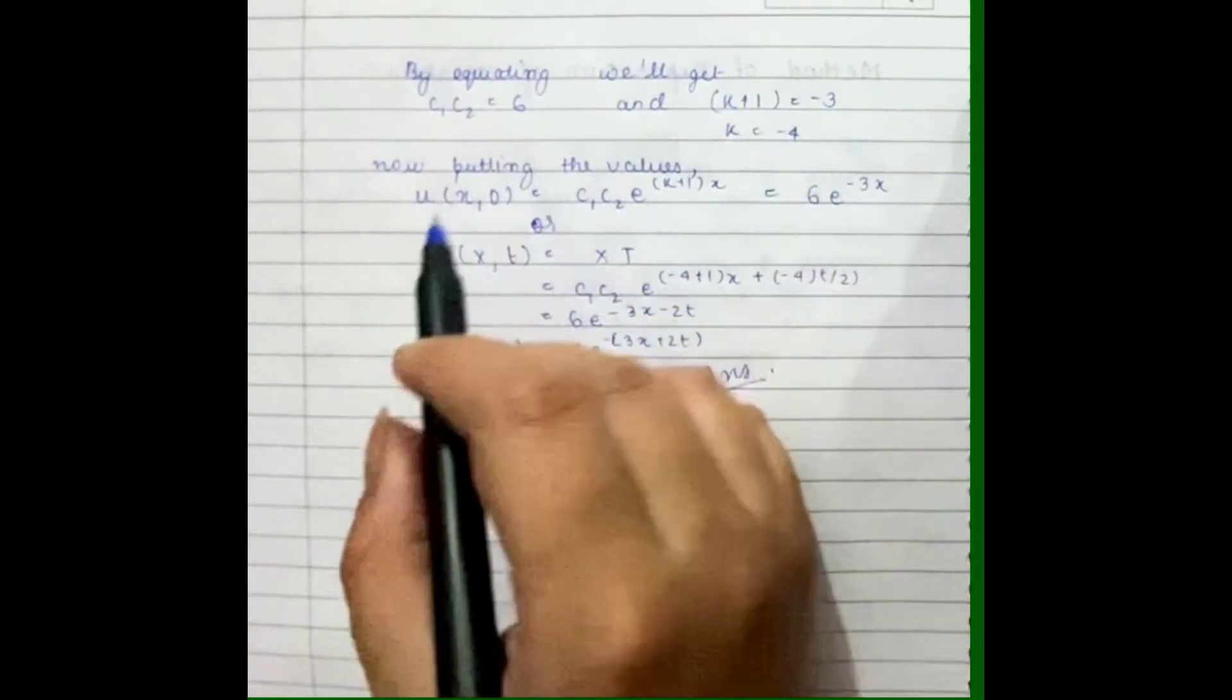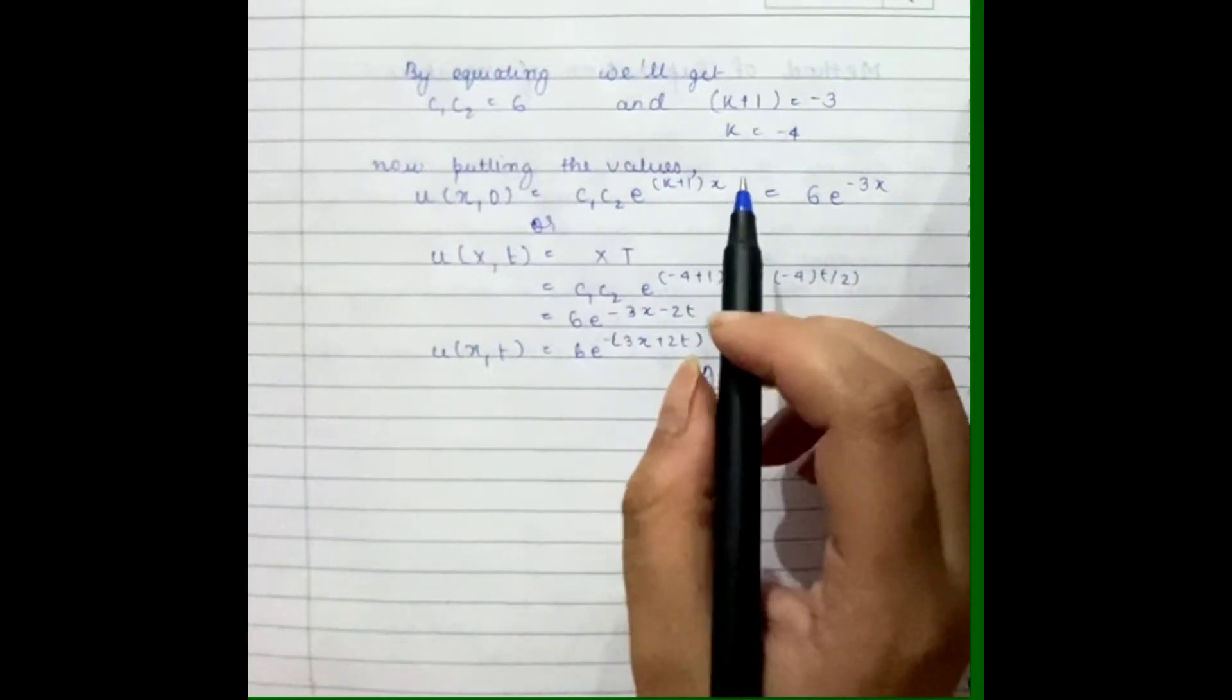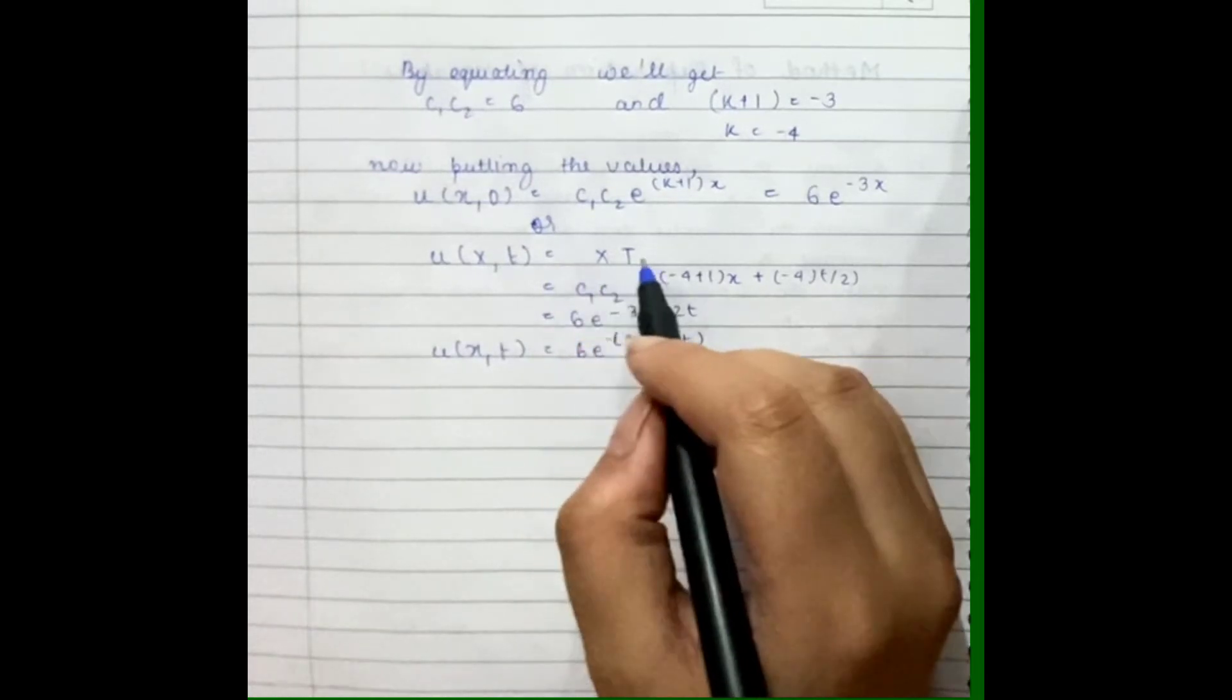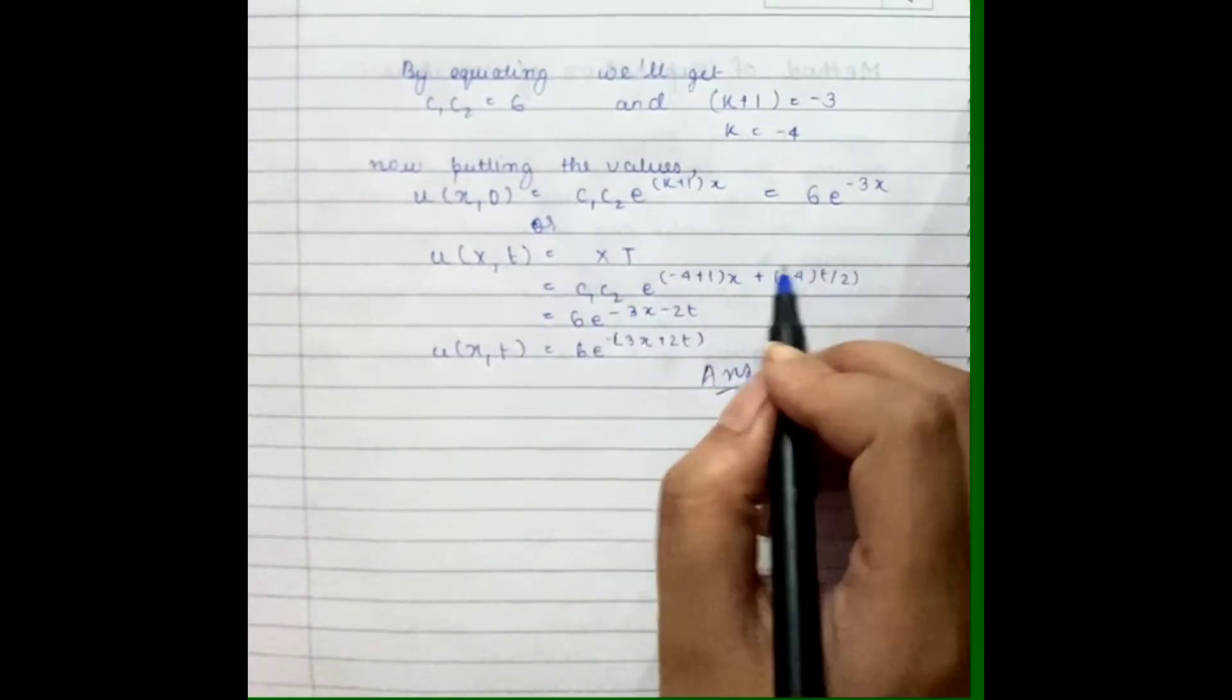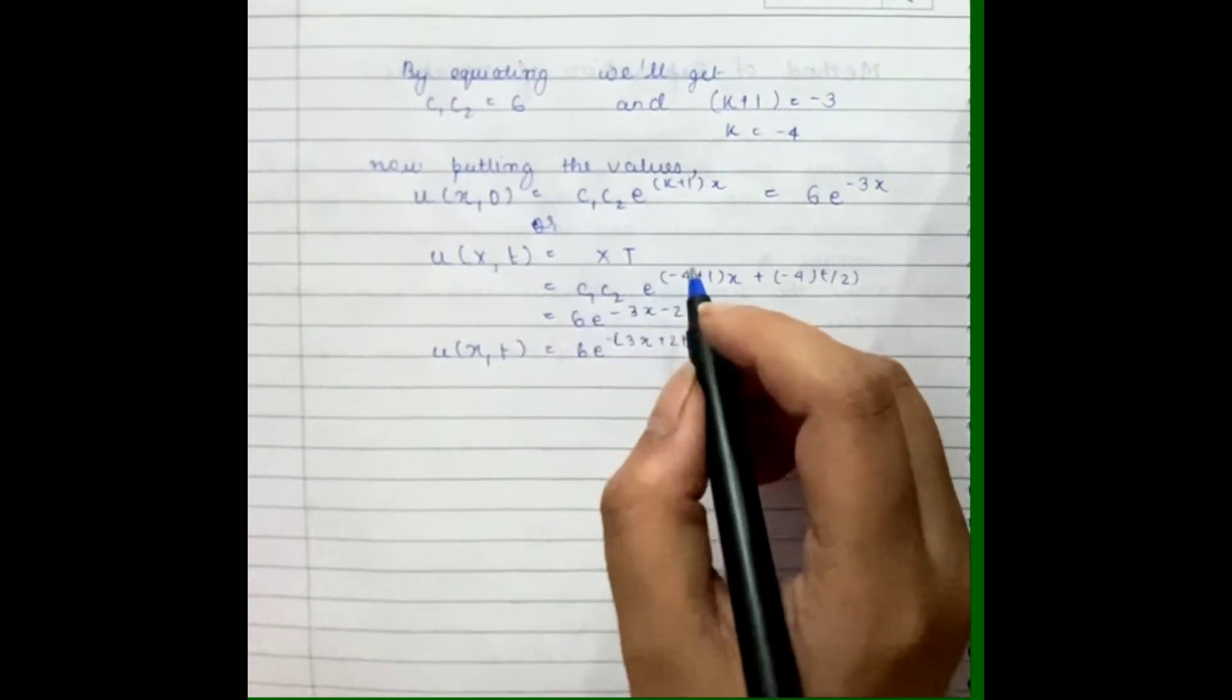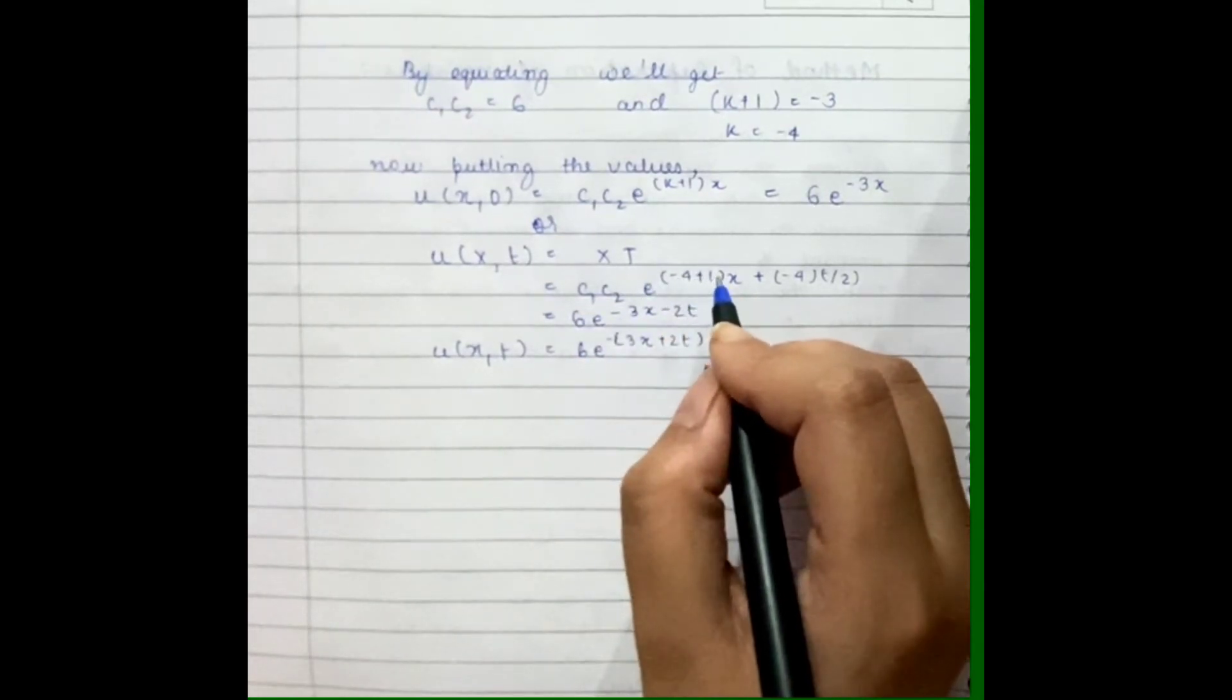Which we have already found, and it was c₁c₂e^((k+1)x + (k/2)t) = c₁c₂e^((-4+1)x + (-4/2)t).